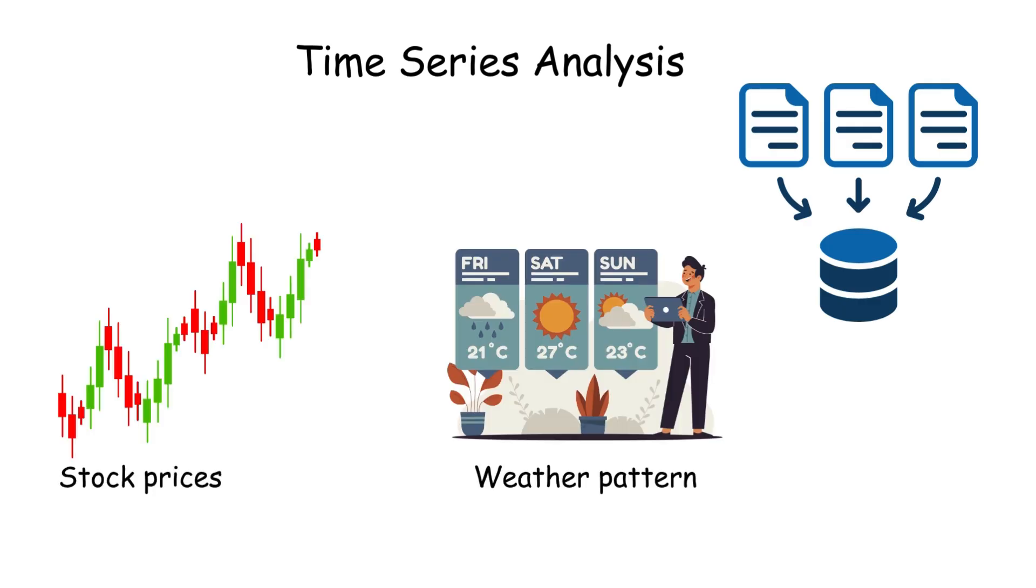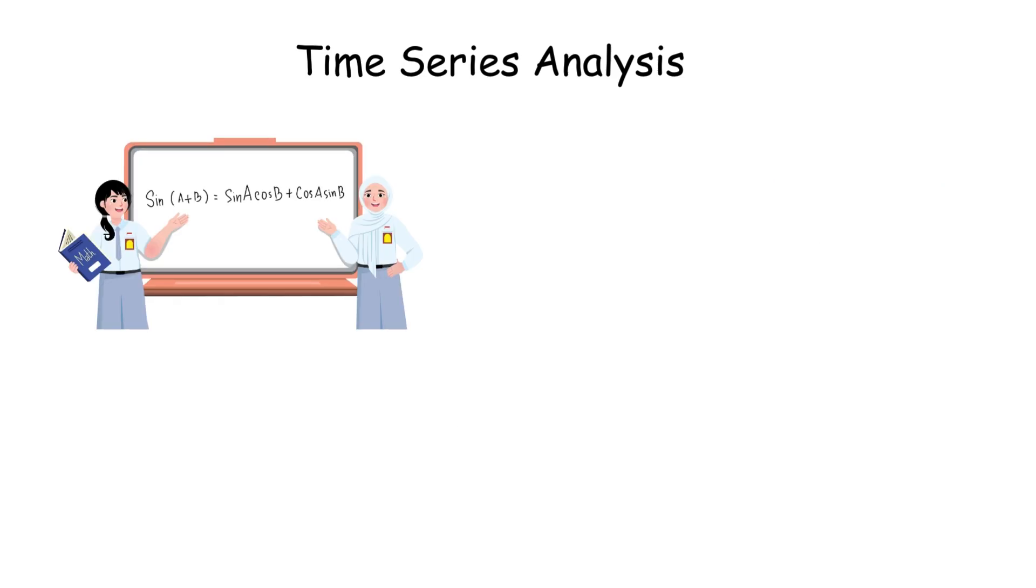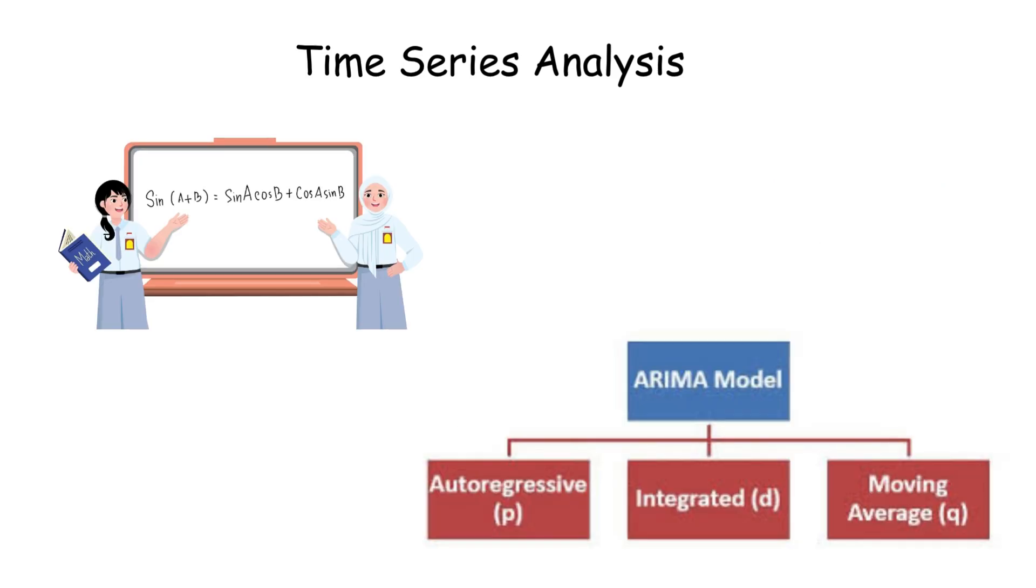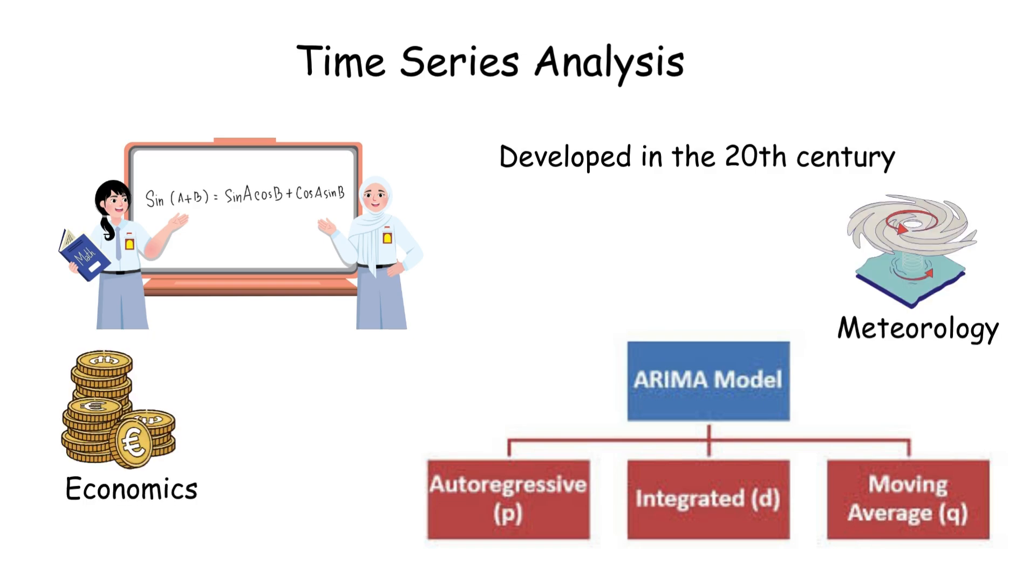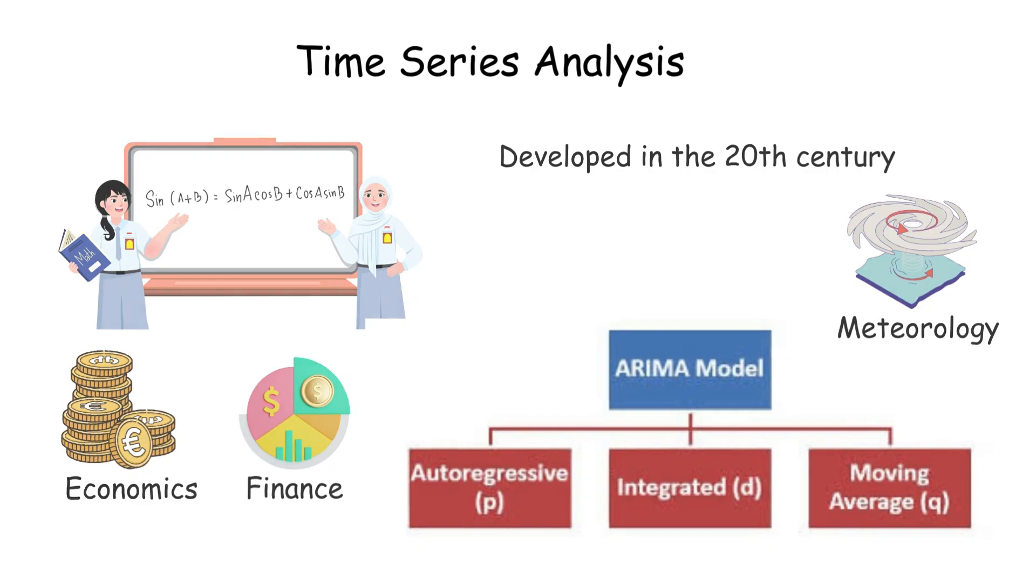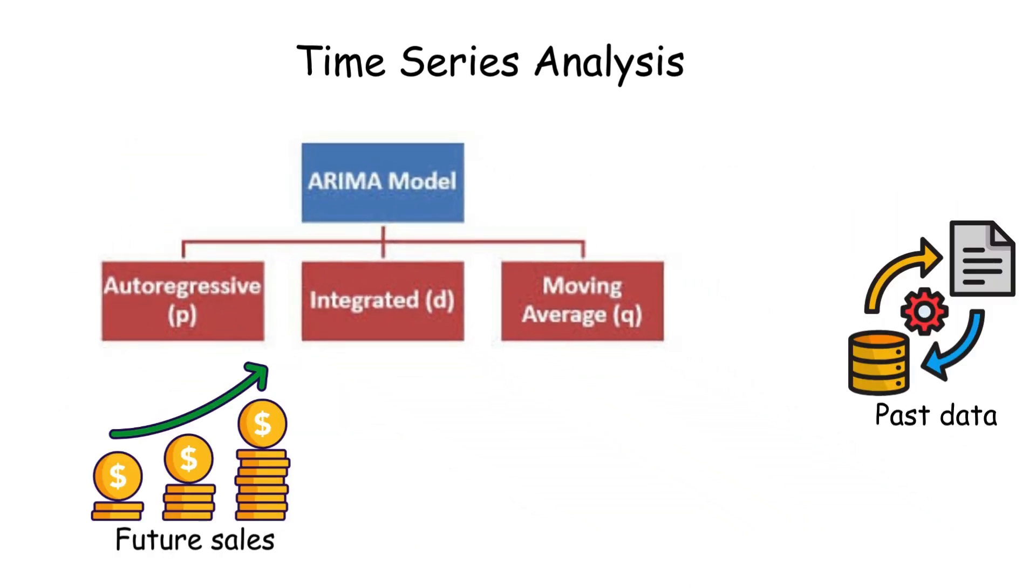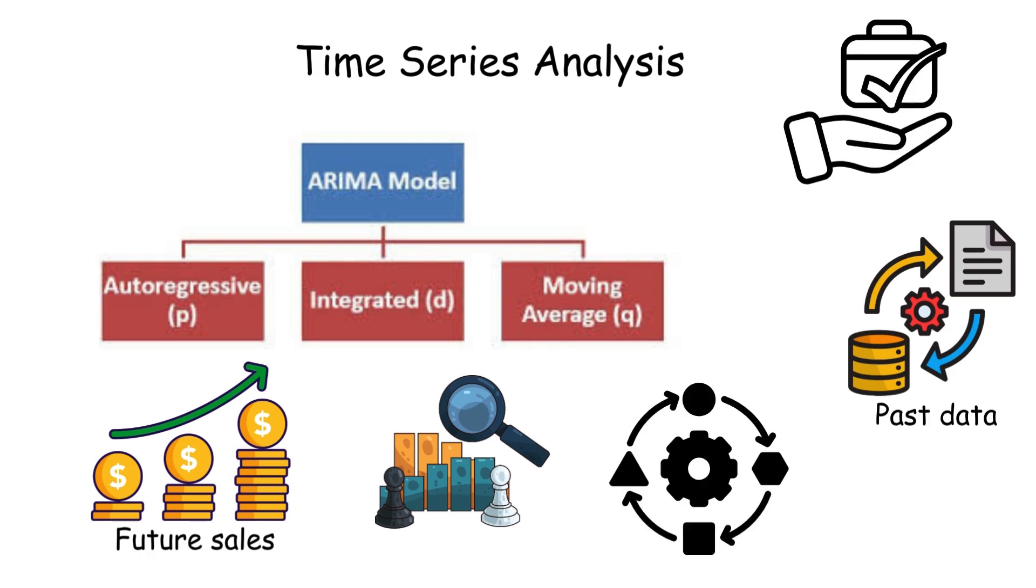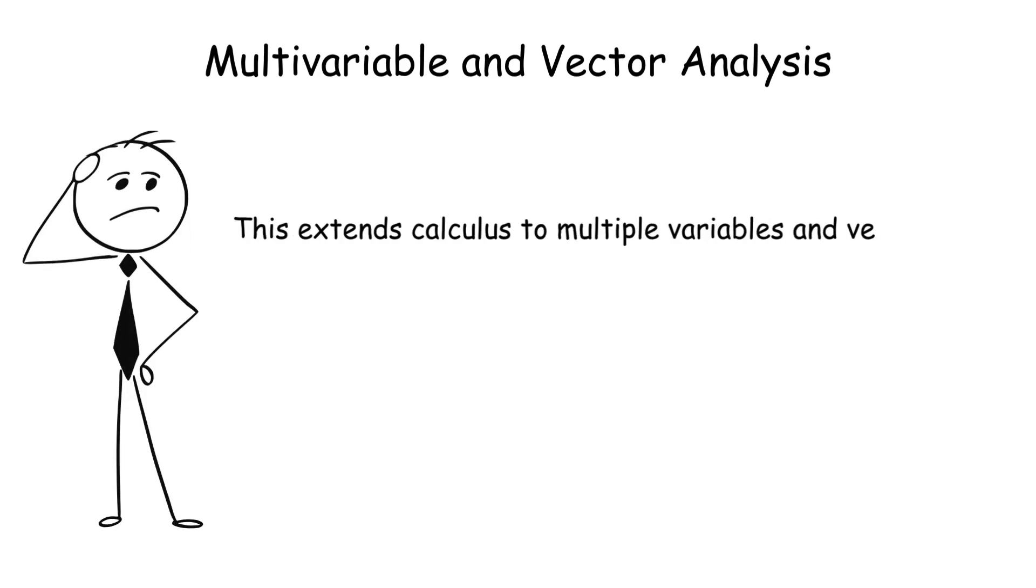Time series analysis studies data collected over time, like stock prices or weather patterns. Rooted in statistics, it uses tools like autocorrelation and ARIMA models to forecast trends. Developed in the 20th century, it's crucial in economics, meteorology, and finance. For example, an ARIMA model predicts future sales based on past data. Unlike static analysis, it captures temporal dynamics, making it essential for understanding evolving systems.